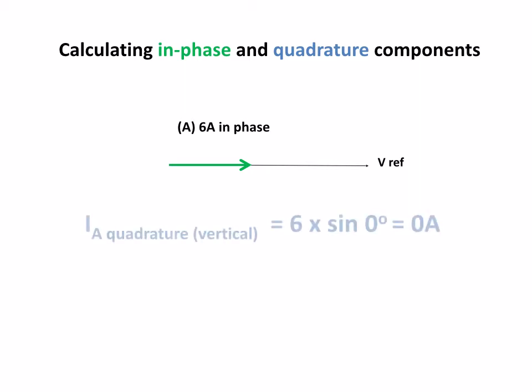So 6 amps in phase, the quadrature component which is our vertical is going to be 6 times the sine of the angle. Now there is no angle because it's a straight line along the reference line, it's in phase. And so 6 times the sine of 0 gives us 0 amps, which is what we'd expect—there's no vertical component. But we do have a horizontal component and it's all horizontal. 6 times the cosine of 0 is 6 amps.